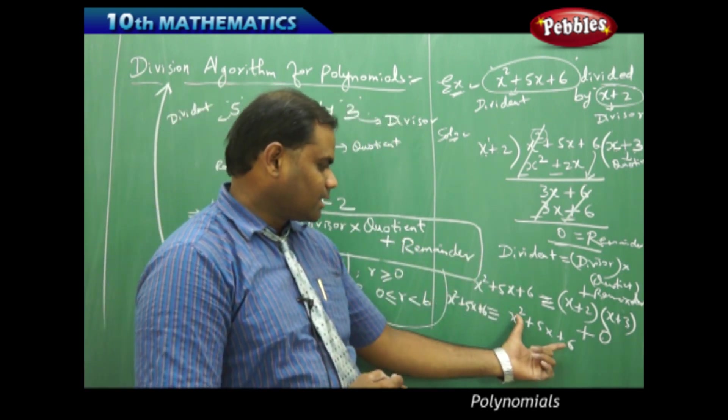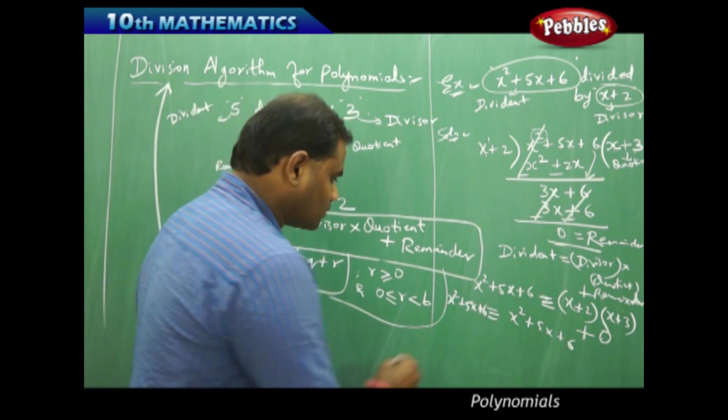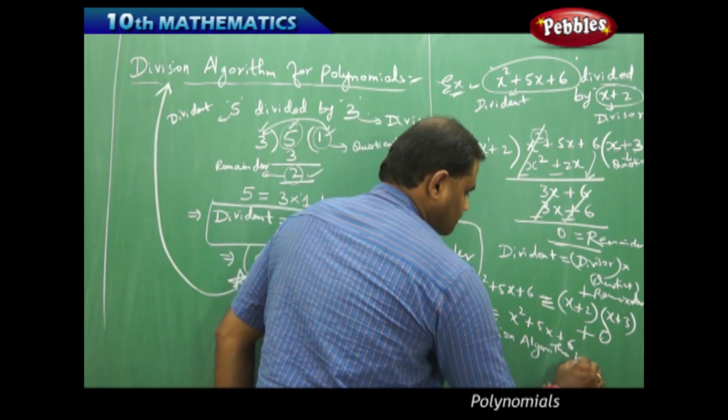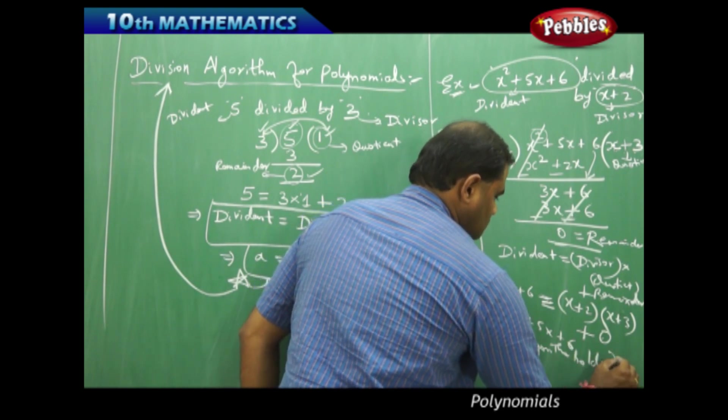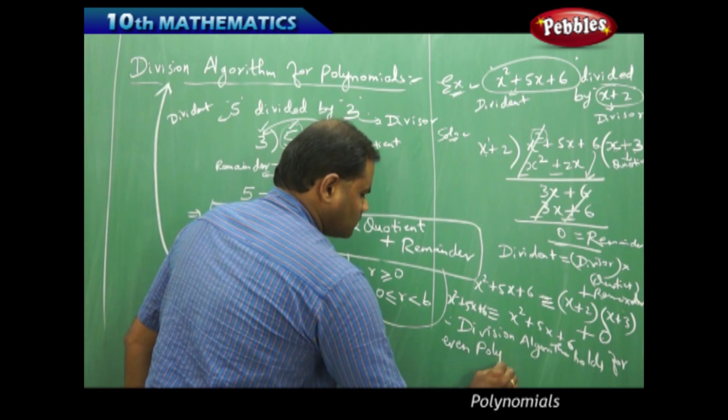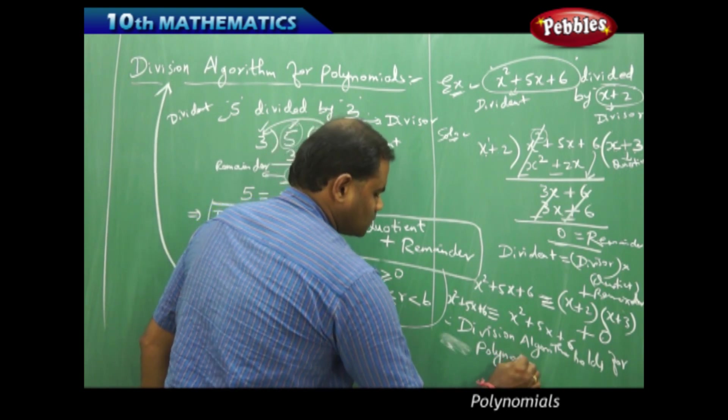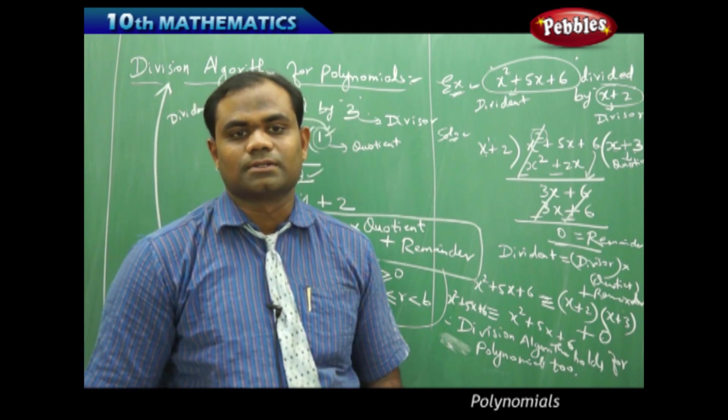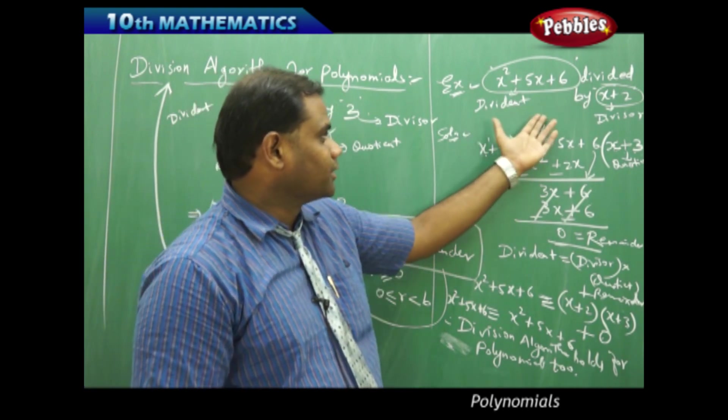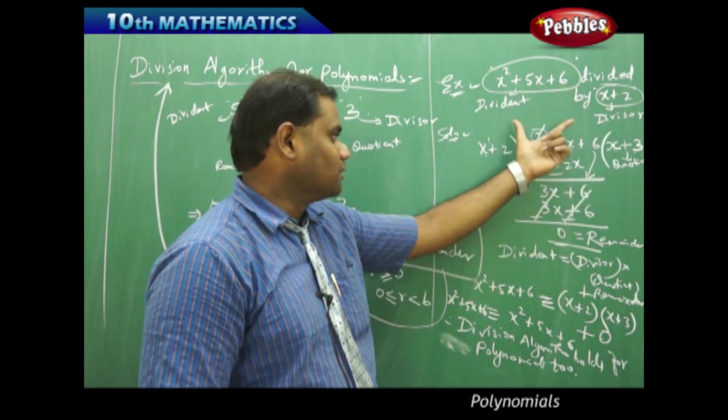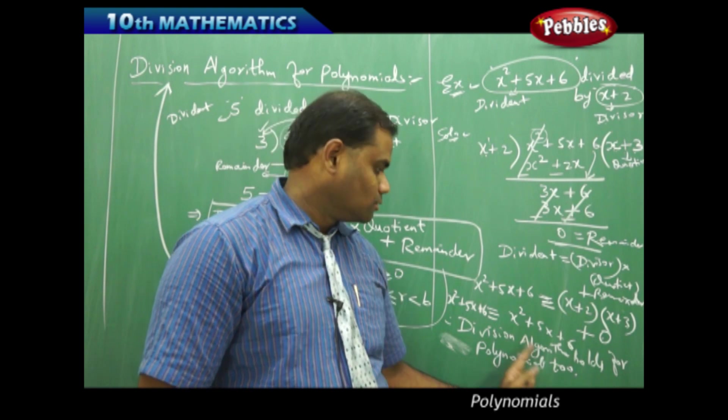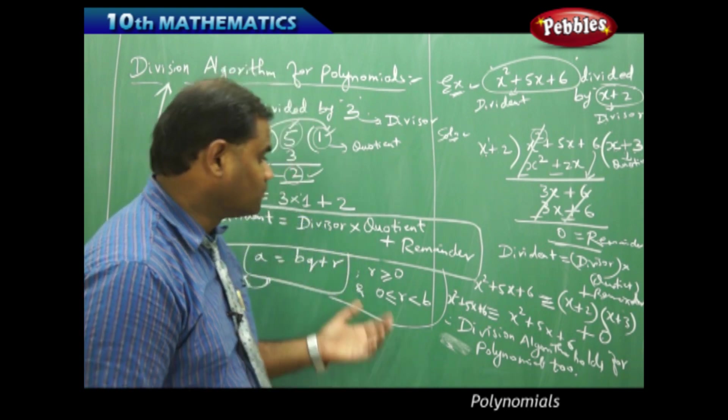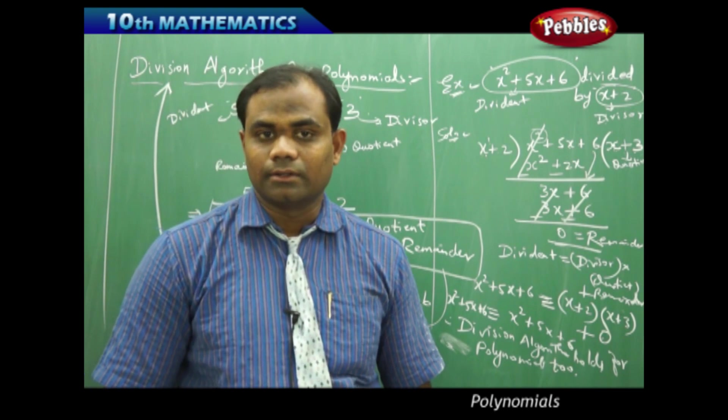Therefore clearly I see that the left-hand side and right-hand side are identically equal. Therefore division algorithm holds even for polynomials too. Division algorithm holds even for polynomials by considering dividend and divisor and division of one polynomial with another polynomial, thus leading to the proof. So division algorithm applies even for polynomials, not only for numbers, is how we understand the division algorithm connected with polynomials.